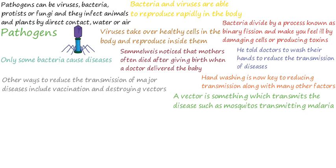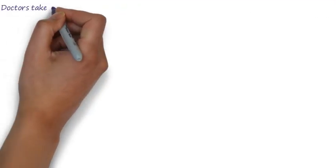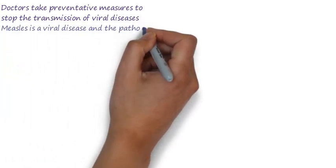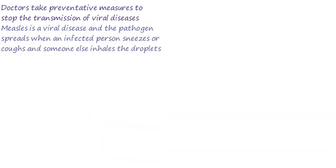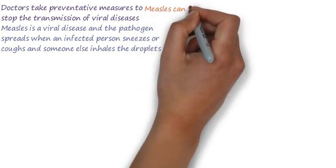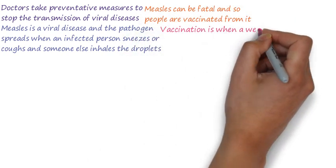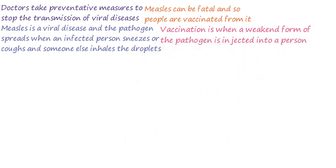Viral diseases are currently unable to be cured, so doctors take preventative measures to stop their transmission. Measles is a viral disease with fever and rash symptoms. The pathogen spreads when an infected person sneezes or coughs and someone else inhales the droplets. Measles can be fatal, so people are vaccinated against it. Vaccination is when a weakened form of the pathogen is injected into a person, ensuring they are prepared if they come into contact with the pathogen again.